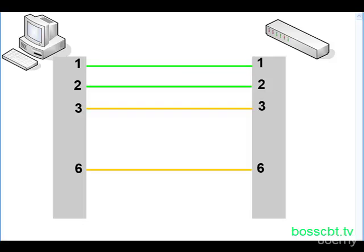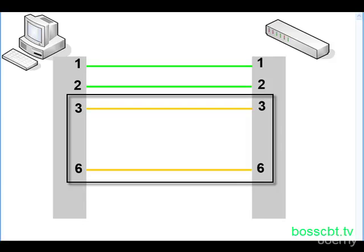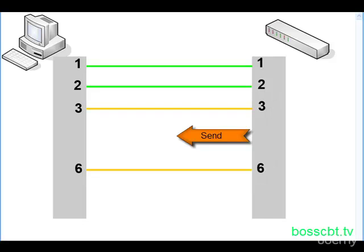Likewise, in the other direction, the switch uses pins 3 and 6, the orange ones, which is pair 2, to send frames to the PC. Likewise, the PC is expecting to receive on that same pair. So you can see one end is sending, the other end is receiving, and they're using the same pair to do that. And that's why it works out really well. Pretty straightforward.